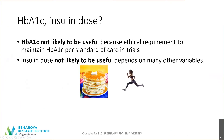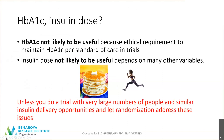What about HbA1c or insulin dose? HbA1c is not likely to be useful because there's an ethical requirement to maintain A1c per standard of care in all trials. Insulin dose is not likely to be useful because it depends on many other variables — in my experience seeing patients for trials for more than 30 years, there's a big difference in insulin dose between a typical teenage boy and a marathon runner. So unless you do a trial with very large numbers of people and similar insulin delivery opportunities and let randomization address these issues, neither of these will be robustly reproducible outcomes in trials within a year or so from diagnosis.